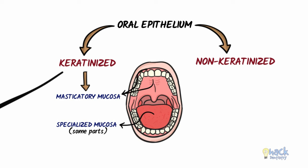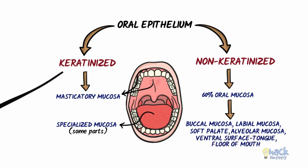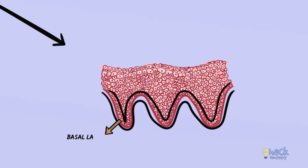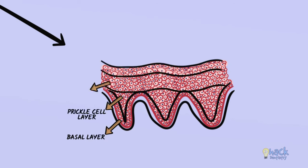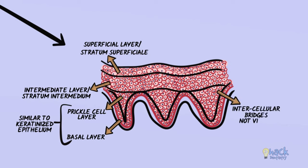The non-keratinized epithelium lines about 60% of the oral mucosa, including the buccal mucosa, labial mucosa, soft palate, alveolar mucosa, ventral surface of the tongue, and floor of the mouth. It consists of a basal and prickle cell layer, and the outer two layers are called the intermediate layer or stratum intermedium and the superficial layer or stratum superficiale. The basal and spinous layers are similar to keratinized epithelium, although the intercellular bridges in the spinous layer are not as visible. Hence, some prefer to consider only three layers in the non-keratinized epithelium.